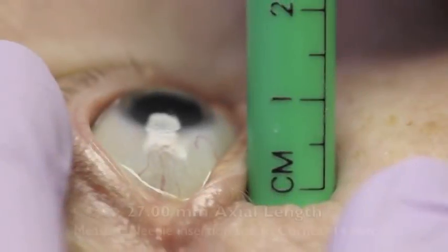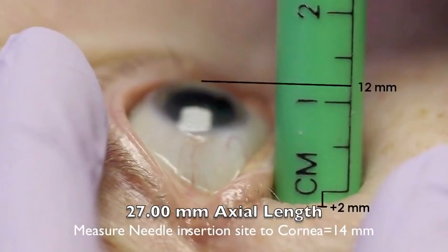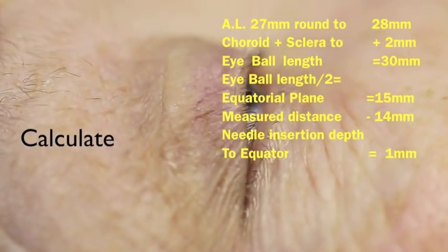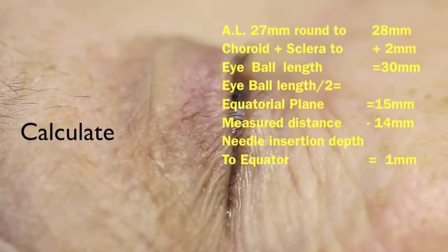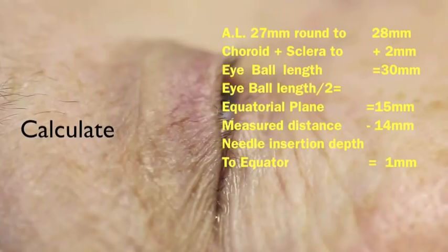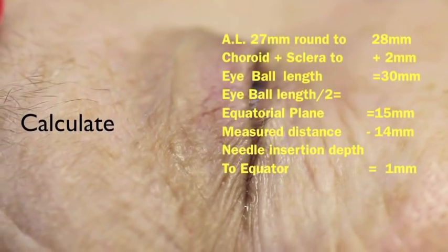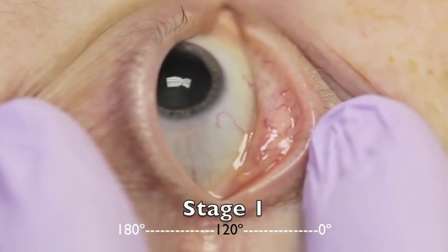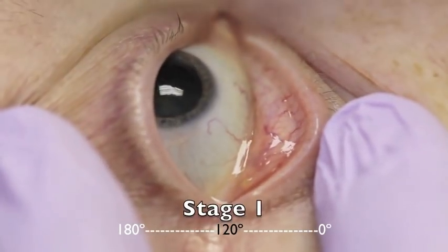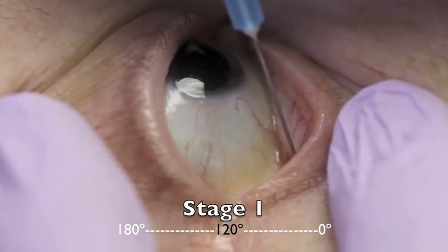Here is a demonstration on a live patient using the transconjunctival technique. Measure the distance from the needle insertion site to the cornea to determine the dynamic orbital globe relationship, here approximately 14 millimeters. Round up the 27 millimeter axial length to 28 millimeters and add the choroid-sclera length of 2 millimeters; the eyeball length is 30 millimeters. Half the eyeball length is the equatorial plane at 15 millimeters. Subtract the initial measured distance of 14 millimeters, and you get the needle insertion depth to the equator: 1 millimeter. Stage 1: insert the needle tip with the bevel towards the globe, 2 millimeters lateral to the limbus and 2 millimeters inferior to the globe at 120 degrees toward the orbital floor, approximately 2 millimeters.